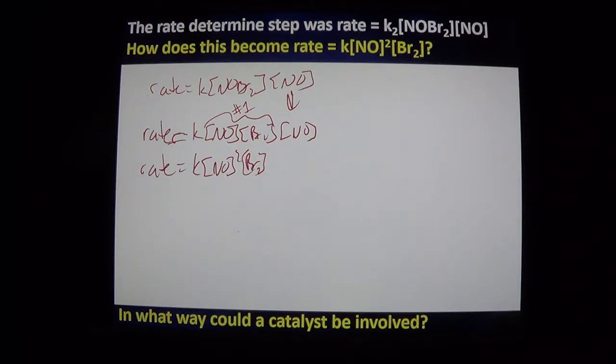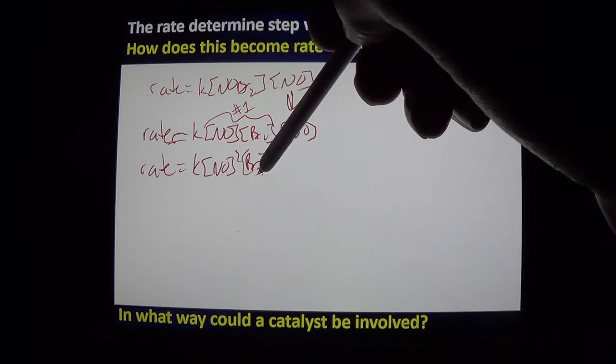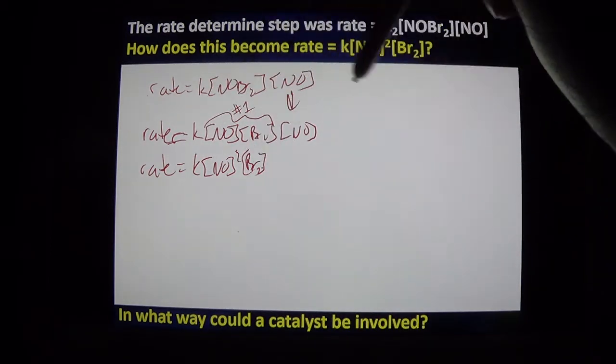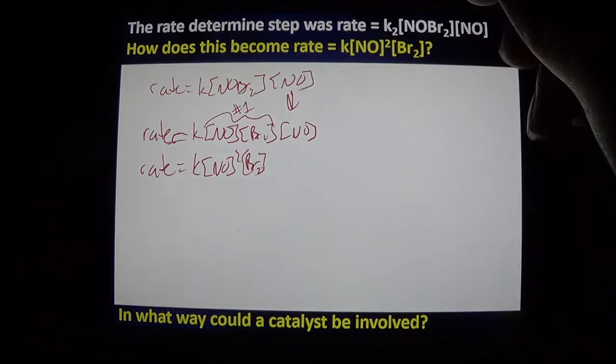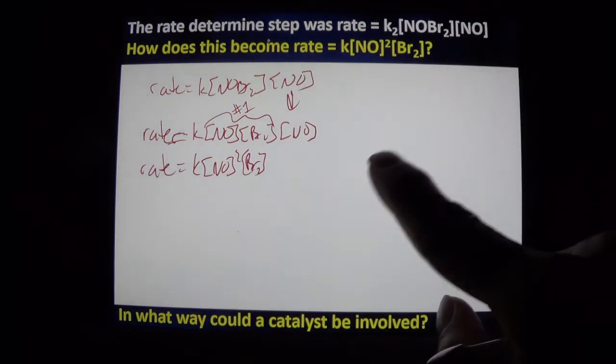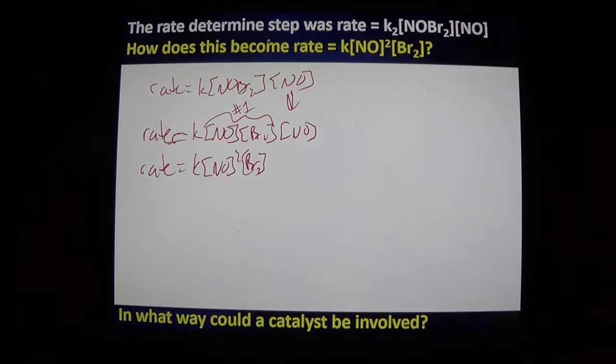How could a catalyst be involved? A catalyst would never appear in your rate law. It speeds up the K, it changes the K. But it would never appear in your rate law, just like an intermediate should not appear in your rate law. Could a catalyst be involved by becoming part of an intermediate to facilitate the reaction? Absolutely. But beyond long years of studying it in lab, we really would not know.